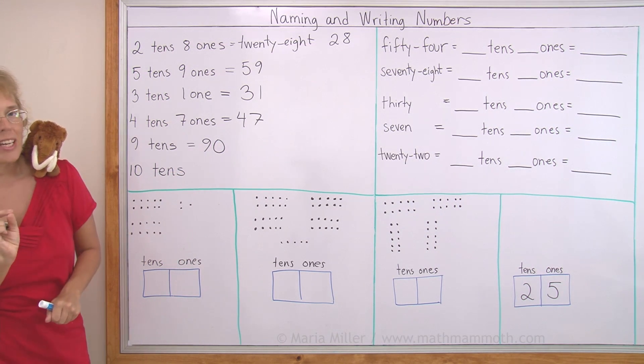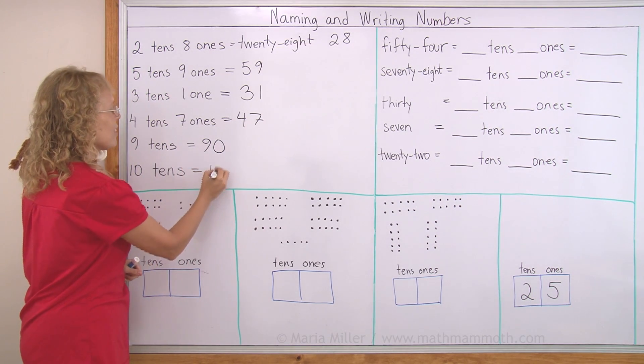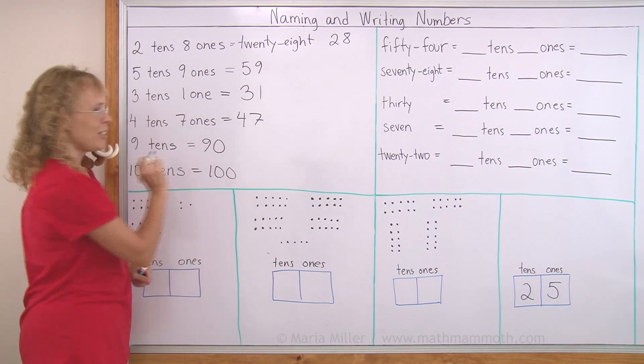10 tens, what was the special name for that? 100, yes. And that's written like this: 1, 0, 0.